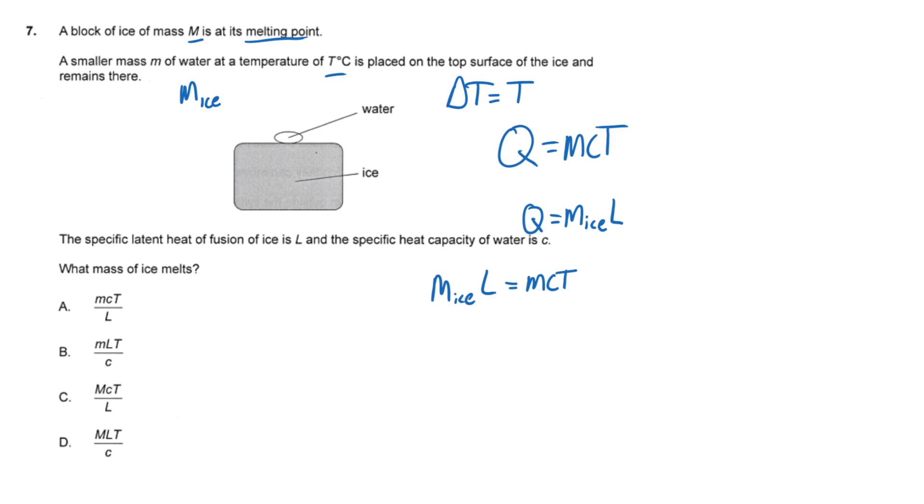So the mass of ice that melts is, well, you just divide each side by L, is mcT divided by L. So the answer is A.